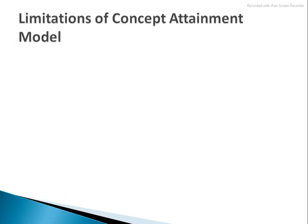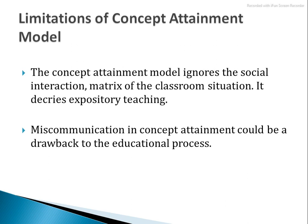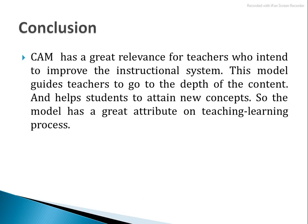Now the limitations of the concept attainment model. One limitation is that it ignores social interaction — the model ignores the social interaction matrix of the classroom situation and decries expository teaching. The second limitation is miscommunication: in concept attainment, every child may see a concept differently — everyone's thinking level is different — so miscommunication can arise and a uniform conclusion cannot always be reached.